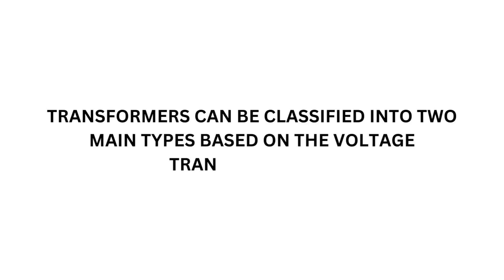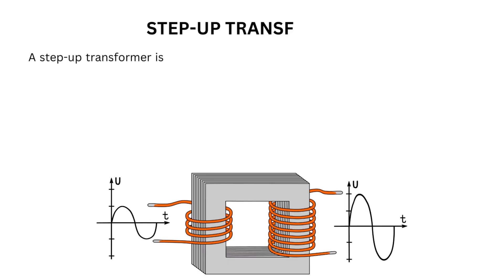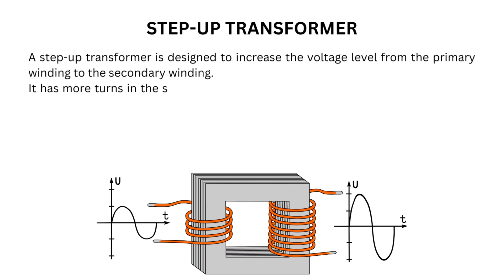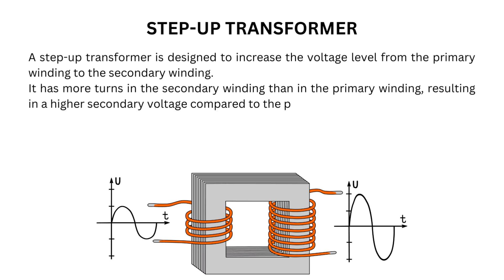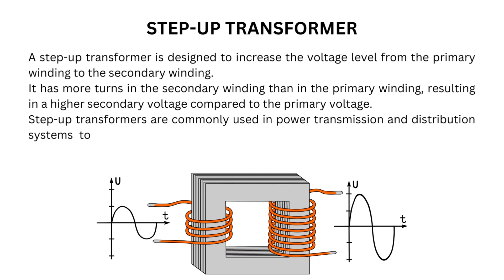Transformers can be classified into two main types based on the voltage transformation. A step-up transformer is designed to increase the voltage level from the primary winding to the secondary winding. It has more turns in the secondary winding than in the primary winding, resulting in a higher secondary voltage compared to the primary voltage. Step-up transformers are commonly used in power transmission and distribution systems to increase voltage for long-distance transmission, minimizing power losses.